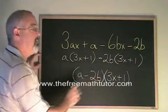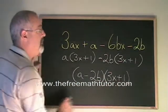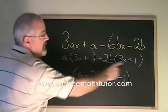Remember, we only write the 3x plus 1 once. What this means is a times 3x plus 1 minus 2b times 3x plus 1, and that's the same thing we have here.